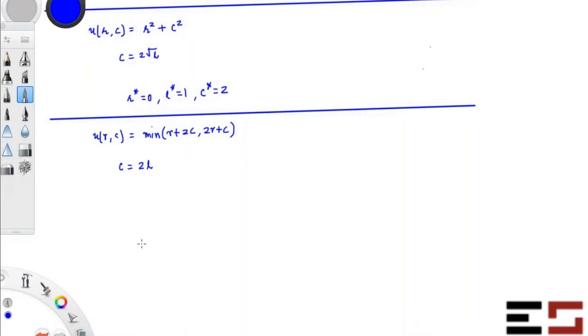Find all the efficient allocations. The utility and C is 2, they're both 2, R is 0 and L is 1.